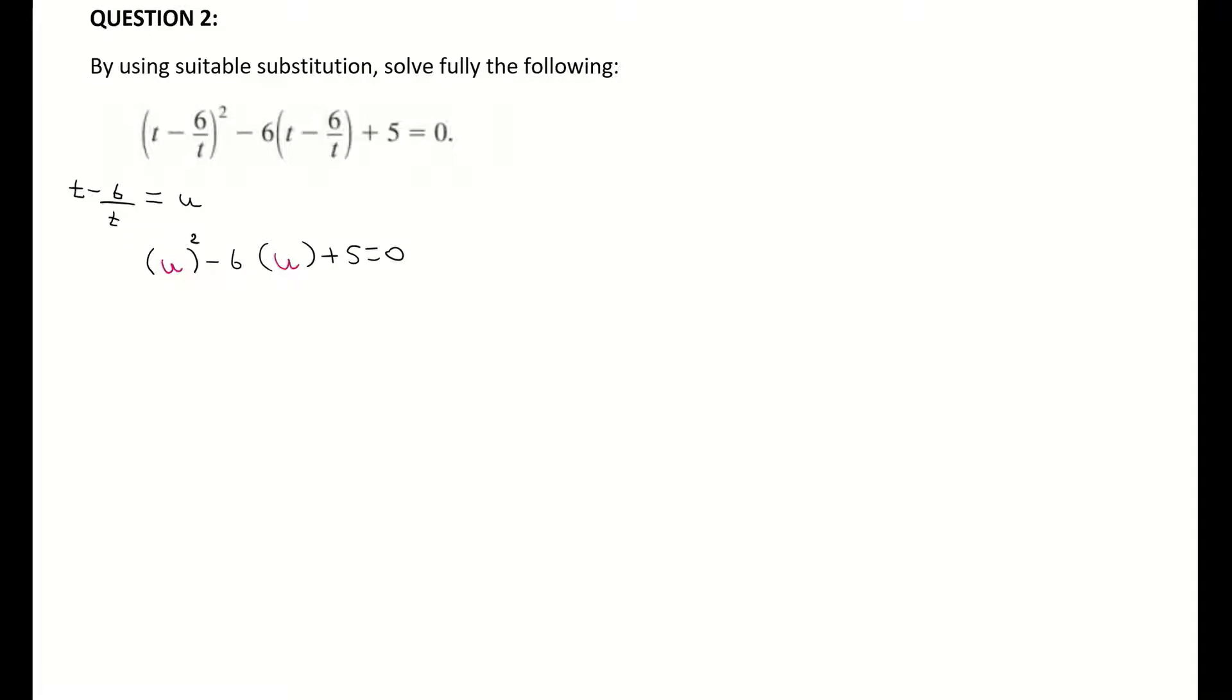You can see here now that this is basically a quadratic equation we're used to looking at with x's. I just have it with a u and all I have to do now is solve that. So I can take out the brackets - that's u squared minus 6u plus 5 equals 0.